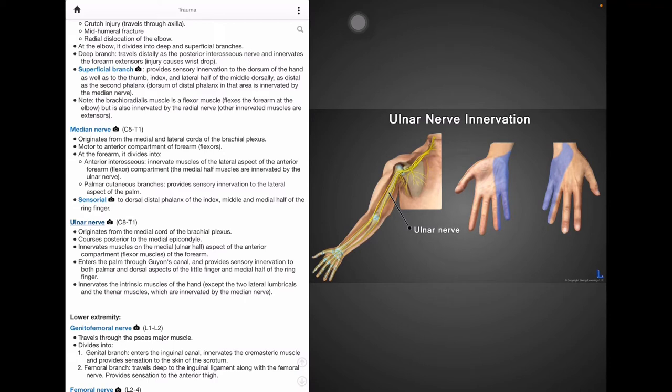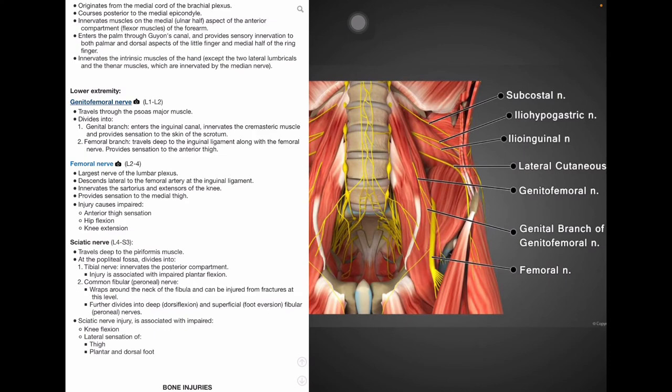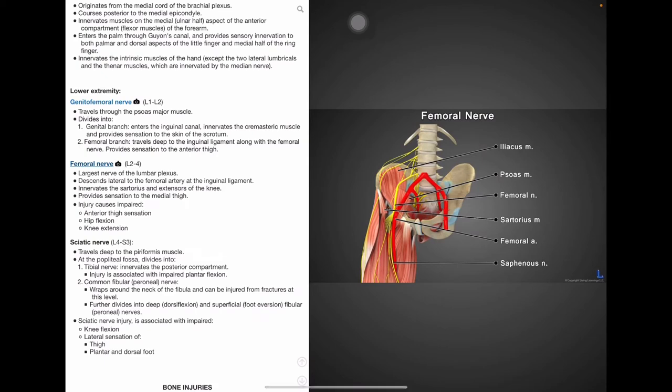For lower extremity, we have the genitofemoral nerve with roots L1 to L2. This nerve travels through the psoas major and divides into the genital branch and femoral branch. The genital nerve innervates the cremasteric muscle and provides sensation to the skin of the scrotum. The femoral branch travels with the femoral nerve and provides sensation to the anterior thigh. That femoral nerve, which is roots L2 to L4, is the largest nerve of the lumbar plexus and it descends lateral to the femoral artery at the inguinal ligament and innervates the sartorius and knee extensors. Injury to this nerve affects anterior thigh sensation, hip flexion, and knee extension. So here's a picture showing the genitofemoral nerve and we can see the branching point and we can also click this photo for the femoral nerve and we can see the femoral nerve coursing along with the femoral artery.